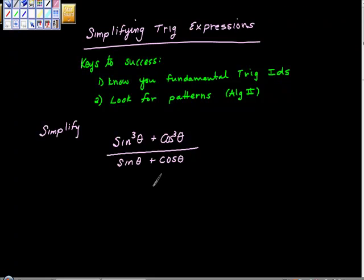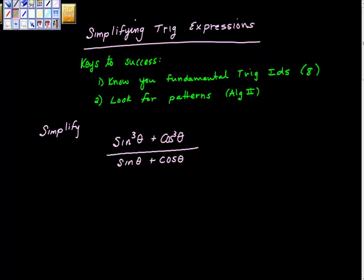Here are some keys to success, and I can't convince you of this any more than I can, but this is crucial. You have to know your fundamental trig identities. There are about eight of them. If you have questions, please look up one of my videos on fundamental trig identities. If you know those eight identities, it makes it so much easier.